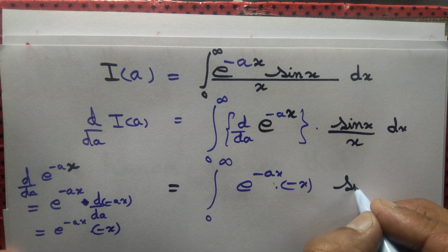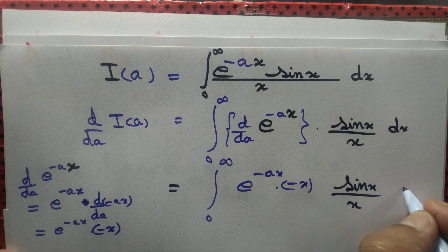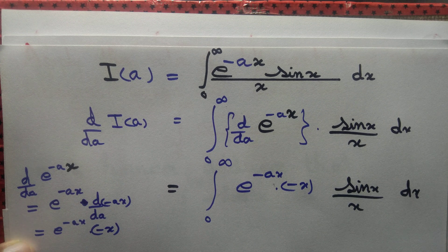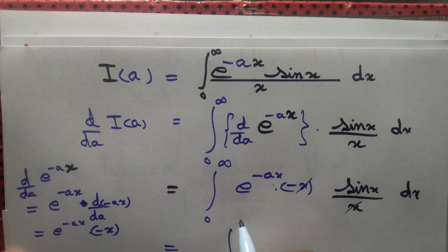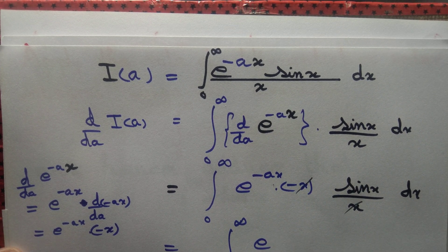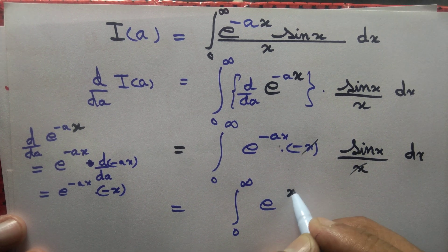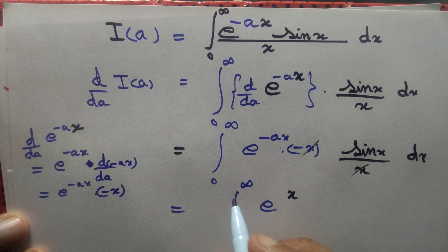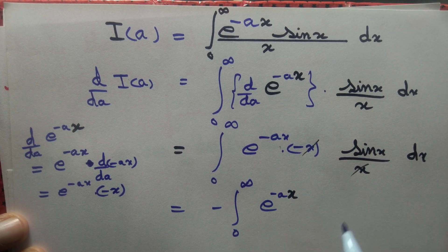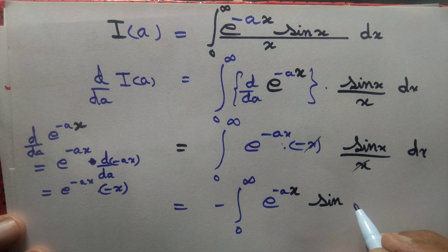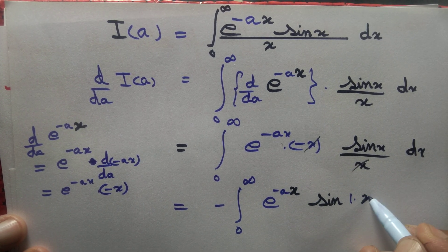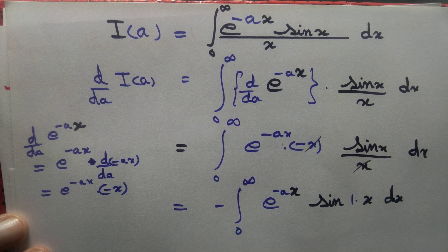We have sin(x)/x as it is, and we're lucky enough that we can cancel the x out. So let's cancel x. Taking minus outside the integral, we get: d/da of I(a) = −∫₀^∞ e^(-ax) sin(1·x) dx. We wrote it as sin(1·x) — the reason will be clear in a moment.